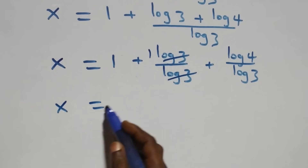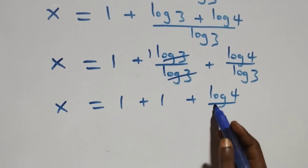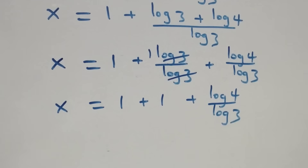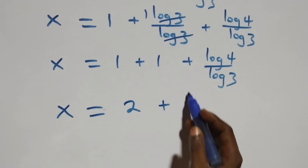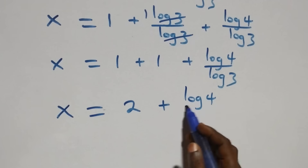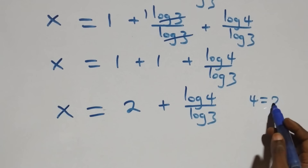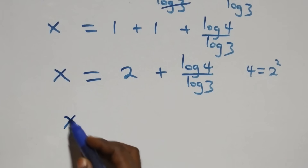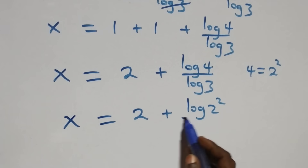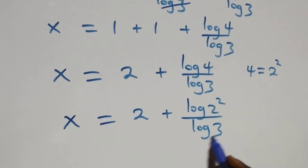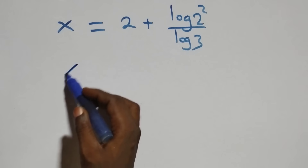Log 3 over log 3 cancels to give one, so x equals to 1 plus 1 plus log 4 over log 3. That is x equals to 2 plus log 4 over log 3. Also, 4 can be written as 2 times 2, which is 2 squared, so x equals to 2 plus log(2 squared) over log 3.